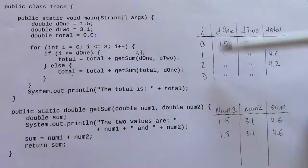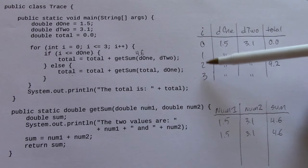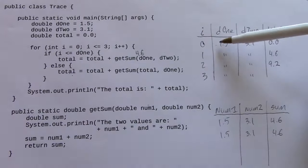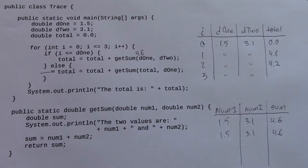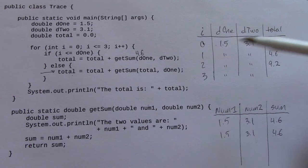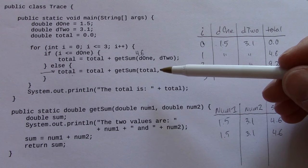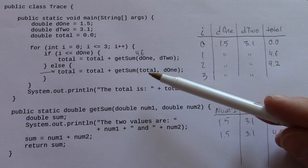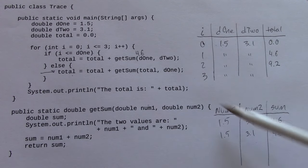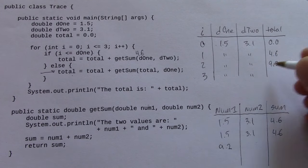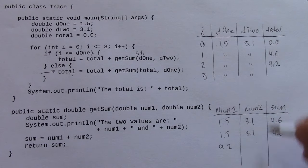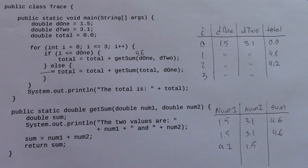Loops around, i is now 2, and 2 is not less than or equal to 1.5. So we're going to be in this branch now, the else block. And notice how the arguments for getSum have changed, right? So now I'm passing total and d1 as the arguments. So num1 is going to be whatever total is, 9.2. And num2 is going to be d1, which is 1.5.